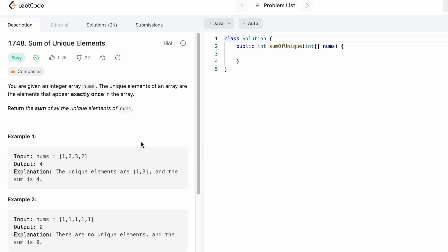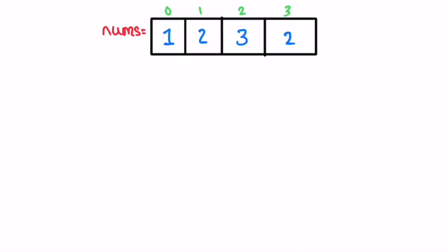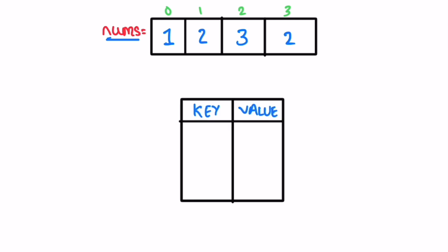Now let's develop the logic to code it up using the same example. This is the nums array. To find the unique elements so we can add them and find the sum, I'm going to use a hash map to store each element and its respective count. The key will be the array element and the value will be its respective count.